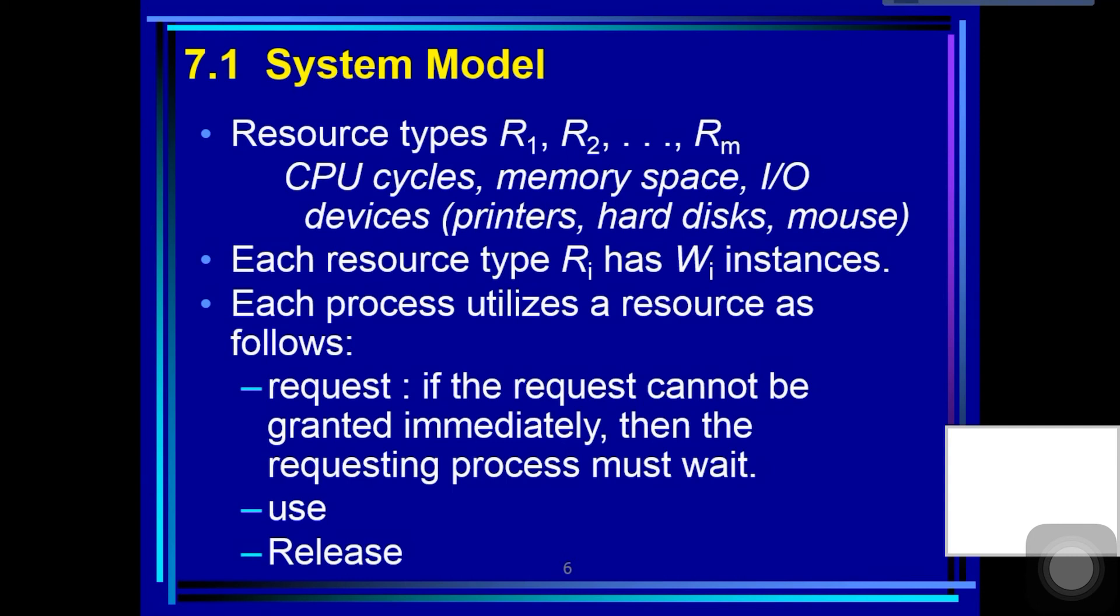If a process requires an instance of a resource type, the allocation of any instance of that type should satisfy the request. If it doesn't, then the instances are not identical.